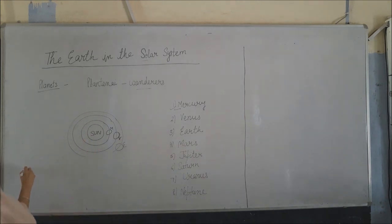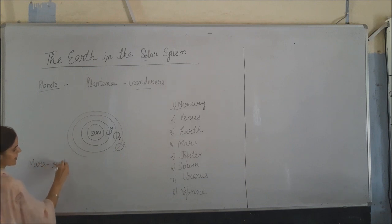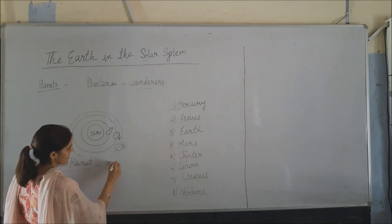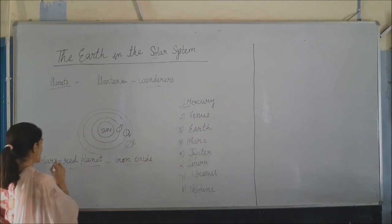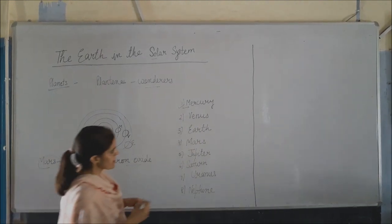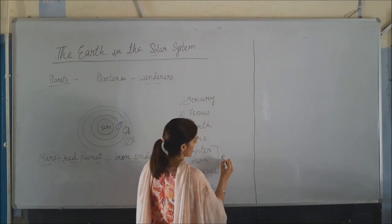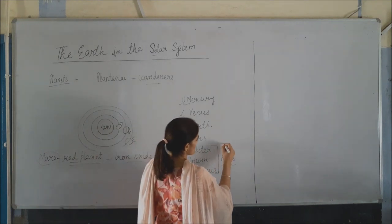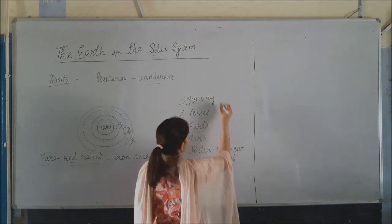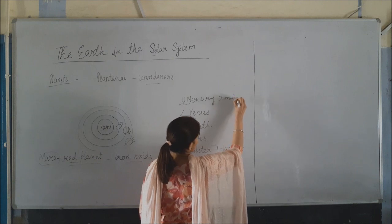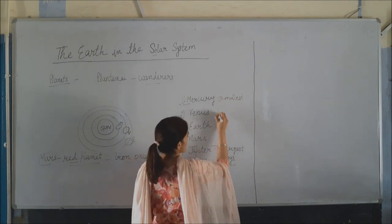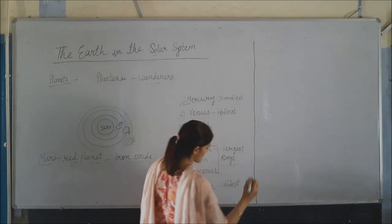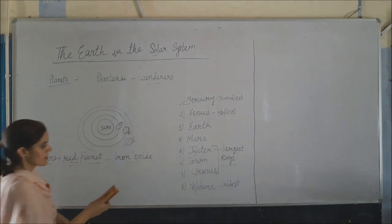Mars is known as the red planet because it contains a huge amount of iron oxide, making it look red in colour. Jupiter, Saturn, and Uranus have rings around them which can be seen from the Earth with the help of a powerful telescope. Jupiter is the largest planet, while Mercury is the smallest. Venus is the hottest planet and Neptune is the coldest planet, as it does not receive sunlight properly.